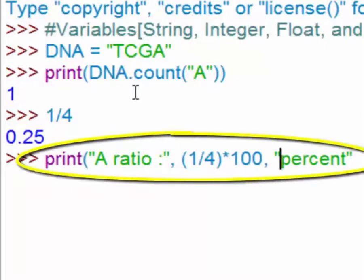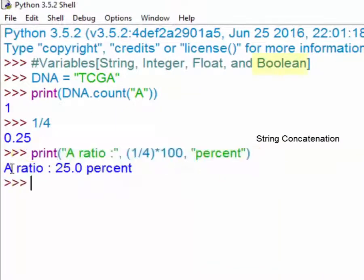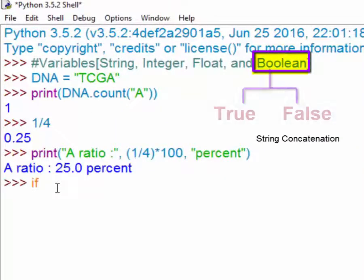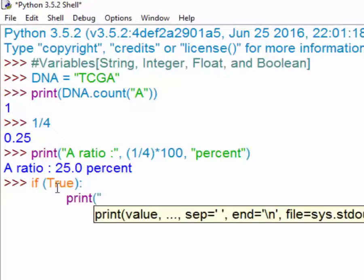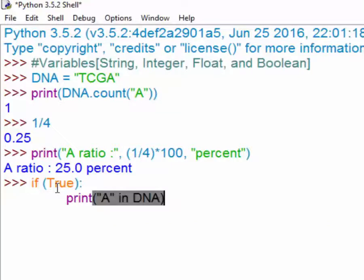A boolean variable is used in if statements generally. This is a logical test. You say if True: print("A in DNA"). If the statement is true, it returns True.